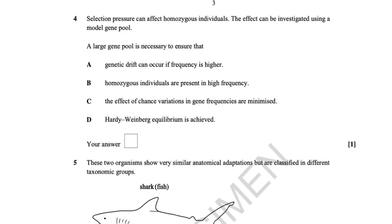Selection pressure can affect homozygous individuals, and the effect can be investigated using a model gene pool. A large gene pool is necessary — and the word 'large' is crucial here. The answer is C: the effect of chance variations in gene frequencies are minimised, because the larger the number of individuals, the less the effect of chance variations.